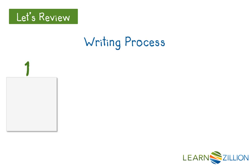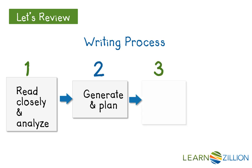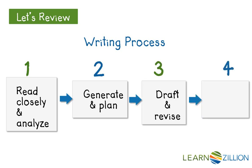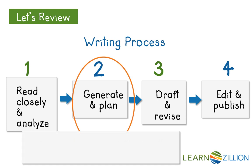In the writing process we have four steps. The first is to read closely and analyze. Second, generate and plan. Third, draft and revise. And the fourth and final step is to edit and publish. We're here at the second phase — the generate and plan step.